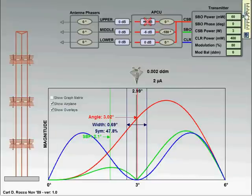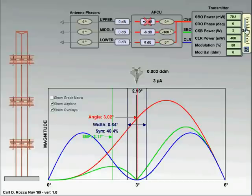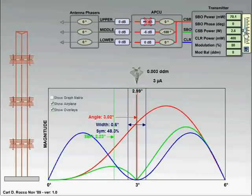All of these adjustments of course interact. Increase the SBO power, decrease the CSB power, you can get back to where you started pretty much.